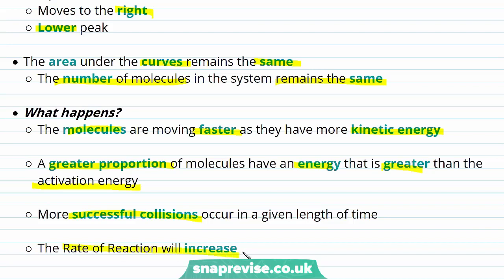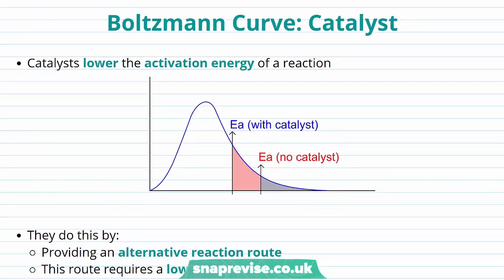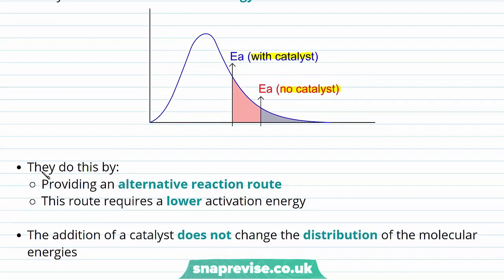Now let's look at the curve in relation to the presence of a catalyst. We know that catalysts lower the activation energy of a reaction. On our curve, the activation energy with a catalyst occurs at a lower energy than without a catalyst. The catalyst provides an alternative reaction route — a route that requires a lower activation energy. Importantly, catalysts don't change the distribution of molecular energies; there is no second curve forming, just a lower activation energy.